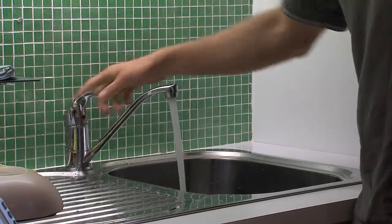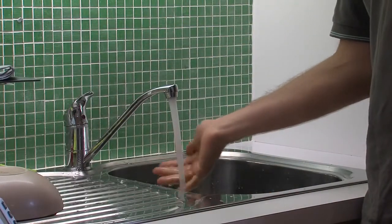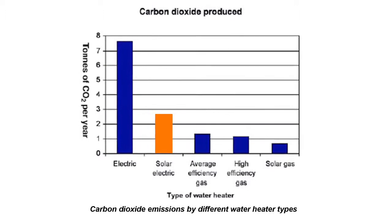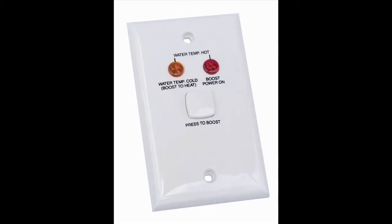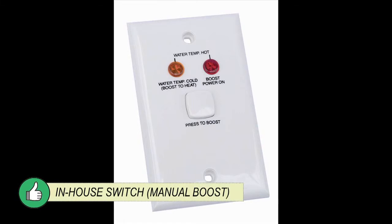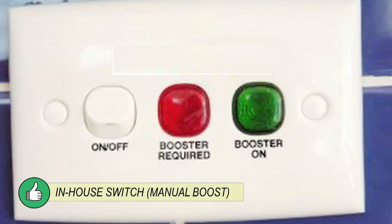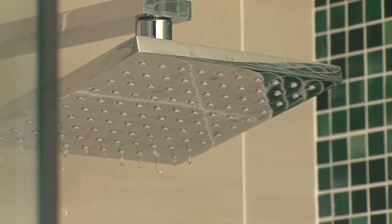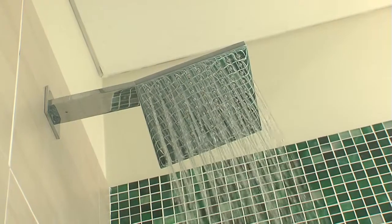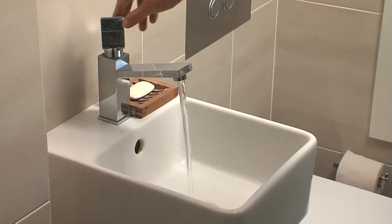The solar hot water system will require boosting at some times of the year. Electric boosters use a lot of power, so make sure the booster is controlled by a manual in-house switch. This switch should include a light to indicate when on. Boosters which have no in-house switch or are permanently on are wasteful, as they often heat water to 60 degrees, water which would otherwise be heated by the sun.